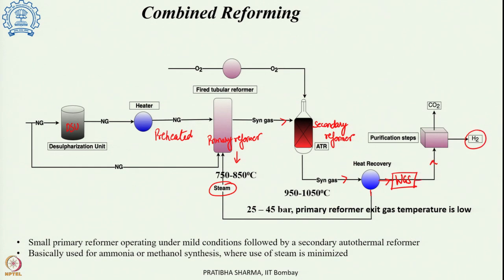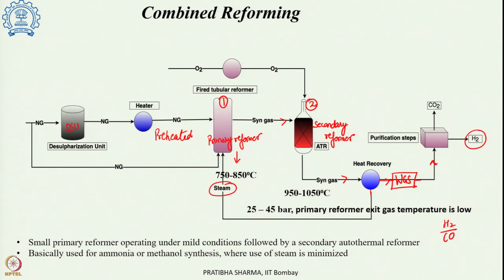After the water gas shift, the syngas undergoes purification steps to separate the various constituents other than hydrogen. The primary reformer is a steam methane reformer operating under mild conditions; the partially reformed gas then goes to the secondary reformer which is an autothermal reformer. This combined reforming method achieves the desired H2/CO ratio for applications such as ammonia synthesis and methanol synthesis, while also reducing steam consumption.